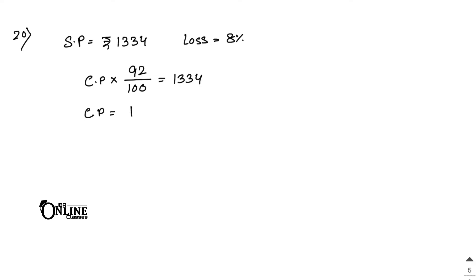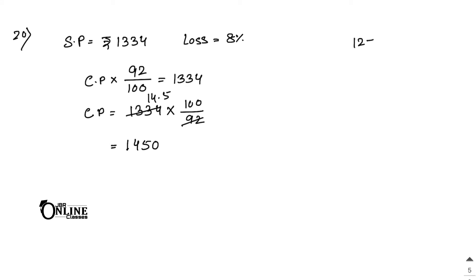CP equals 1,334 into 100 by 92. Dividing 1,334 by 92 gives 14.5, so 14.5 into 100 equals 1,450 as the CP. Now find how much he should sell it to make a profit of 12 and a half percent, which is 25 by 2 percent.